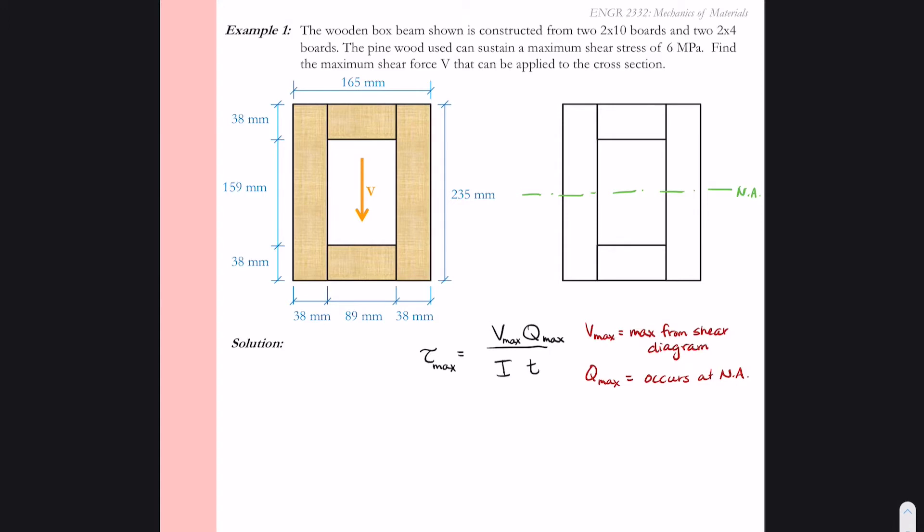When we consider Q, we'll be considering really just one side of the cross-section from the neutral axis. So I like to think we're going to start from the top and work our way down to the neutral axis and then we'll stop in our calculation of Q.